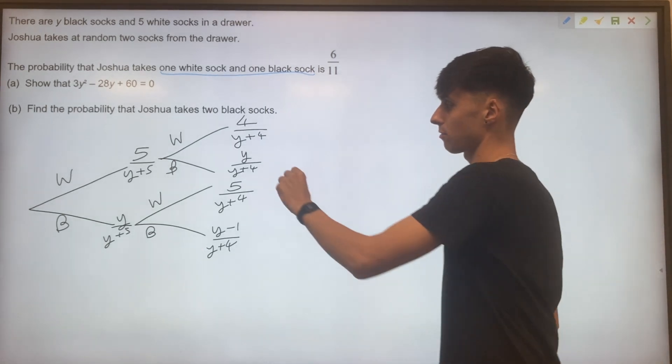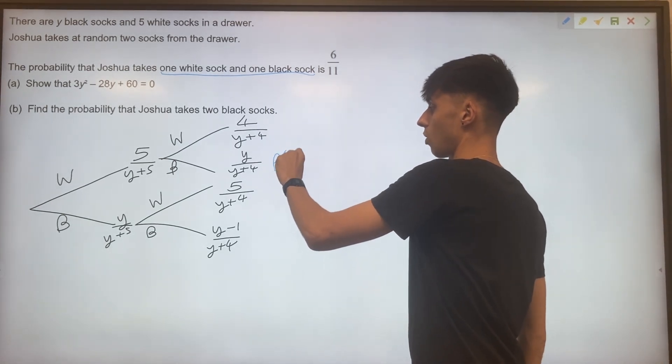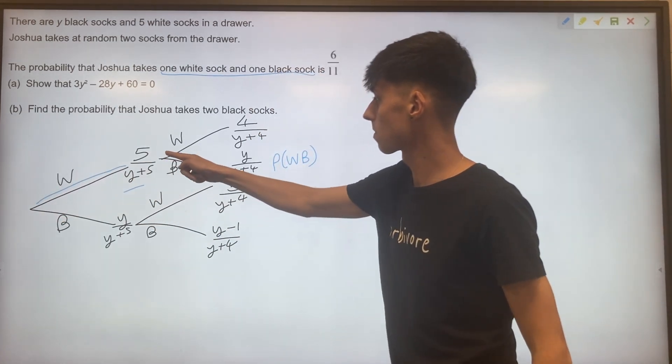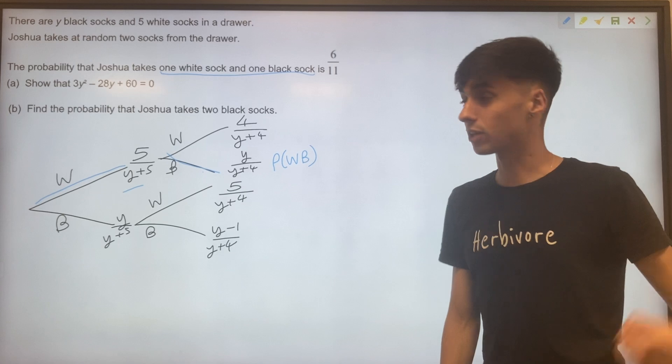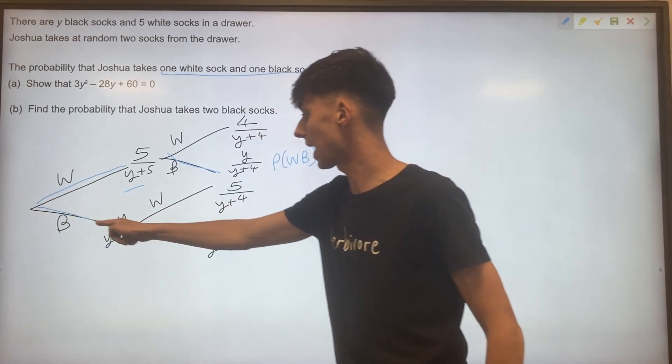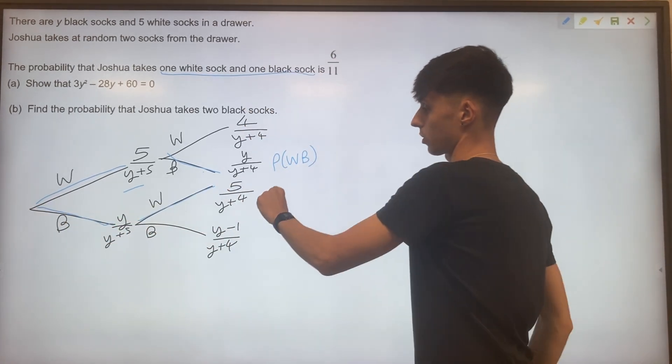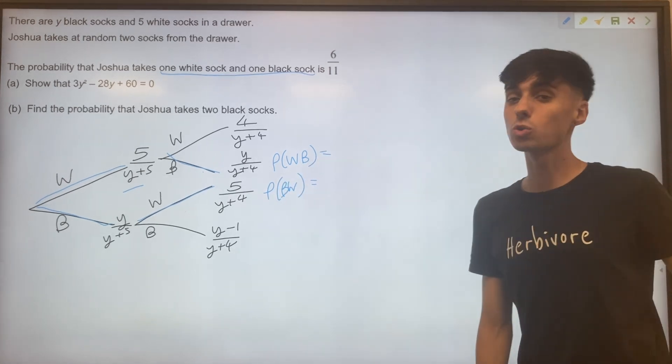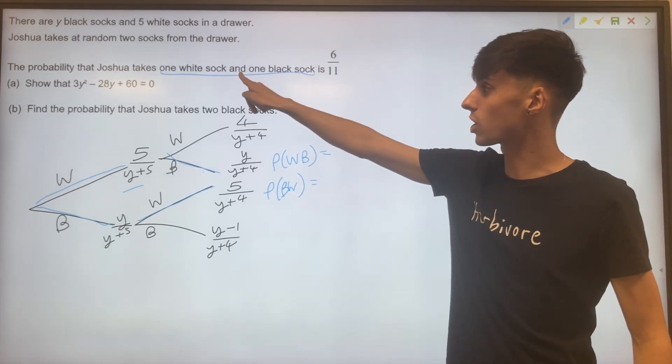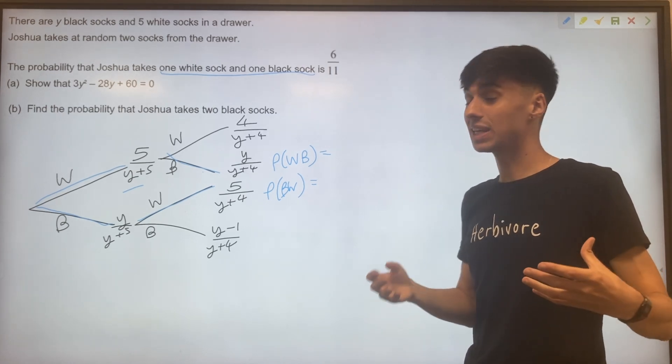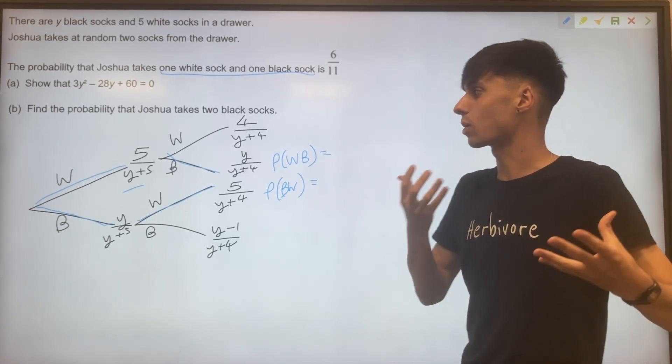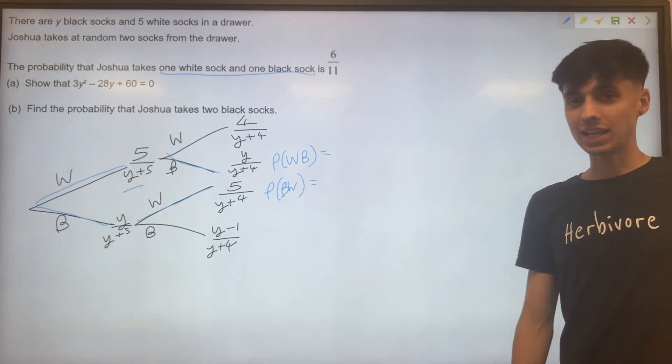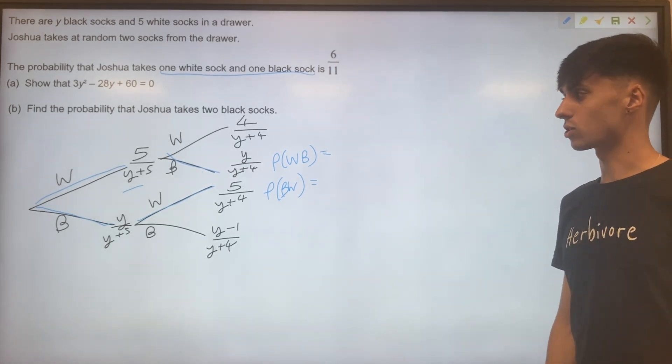So we actually have two possible outcomes that could fit this description. We could have the probability of a white sock and a black sock. That's this option. Or we could have the probability of a black sock and a white sock. Because we weren't given a specific order, we have to assume we could either have white black or black white. They both give us one white and one black.